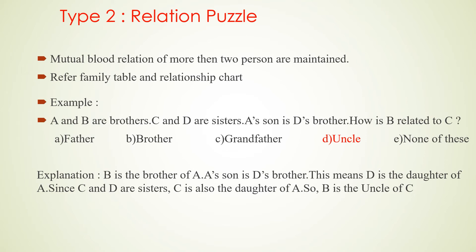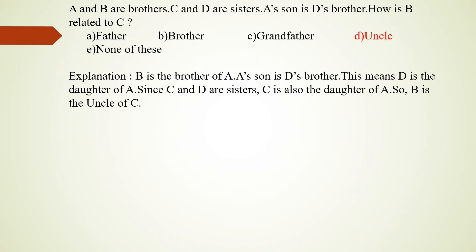Type 2 is a relation puzzle. We can give multiple relations — the mutual relation of more than one person is maintained. We can draw a family table and a relationship chart. To solve it, we use a drawing system to answer the question. Example: A and B are brothers, C and D are sisters, and A is the son of D's brother. How is B related to C?